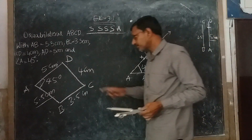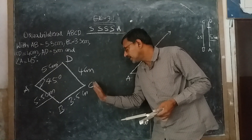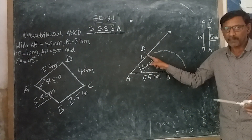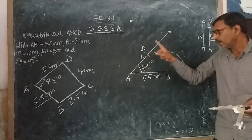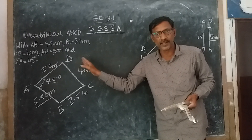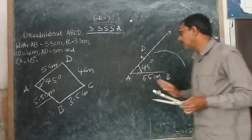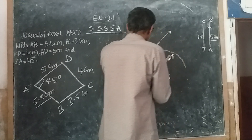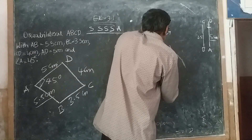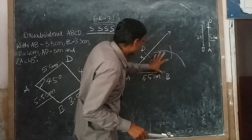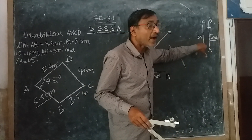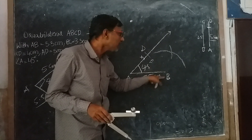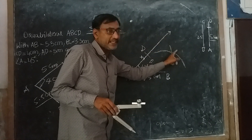Now coming to D. C is 4 cm from D, or D is 4 cm from C. I know where D is but I don't know where C is. So with D as center, I will draw an arc of radius 4 cm on the previous arc from B. The intersection point — that is 3.5 cm from B and 4 cm from D — is my point C.